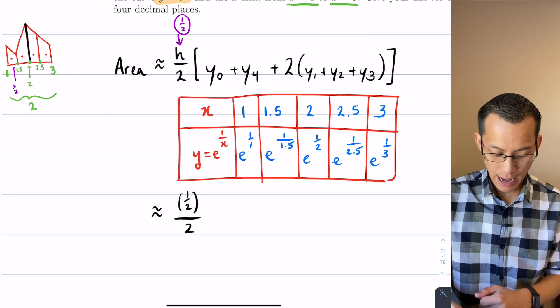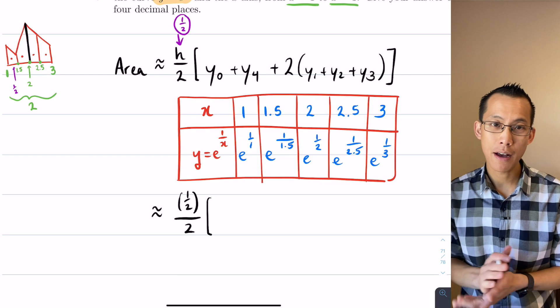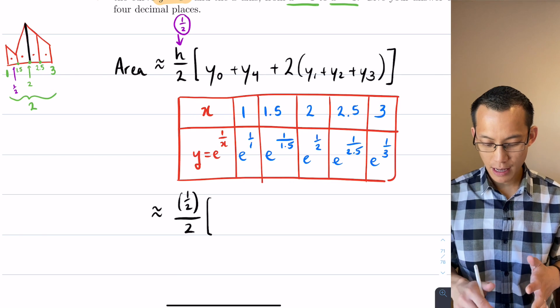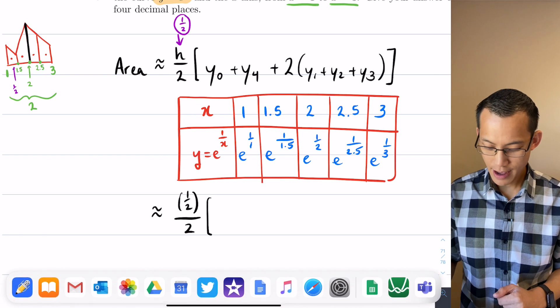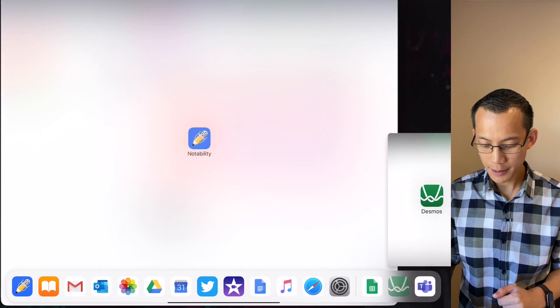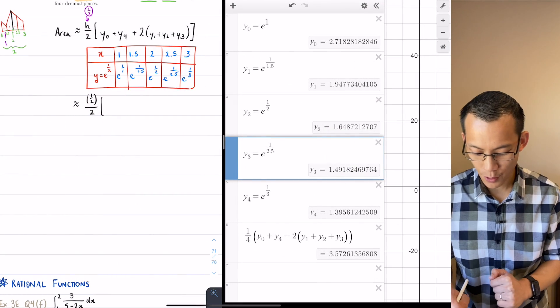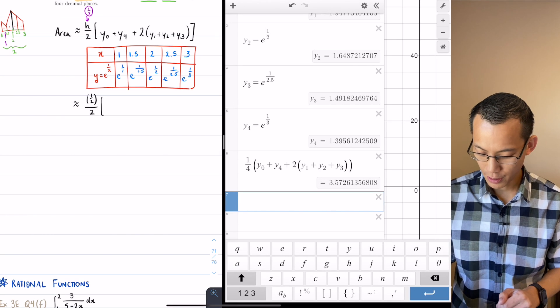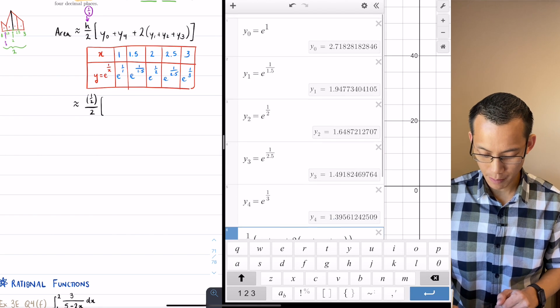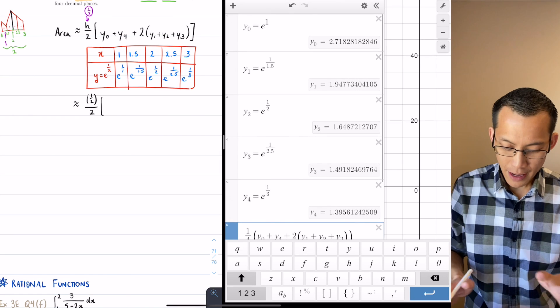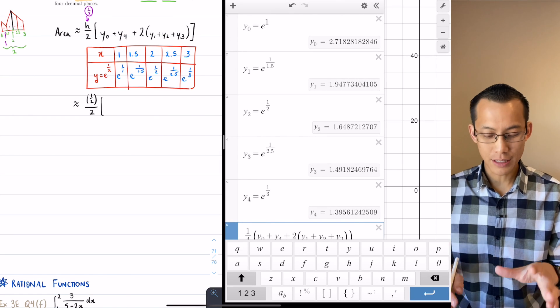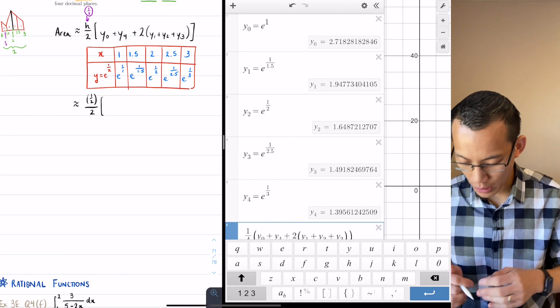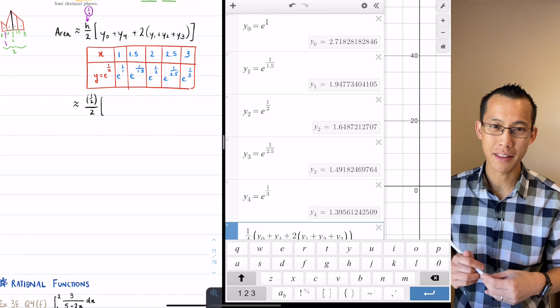Once you've got each of these, they are what you're going to substitute into y naught, y4, y1, y2 and y3. So what I've got is this is approximately equal to a half on 2, that's going to be equal to a quarter. And then in here I'm going to put in all of my values. Now what I've actually done is I've got my calculator already and I've evaluated what these are.